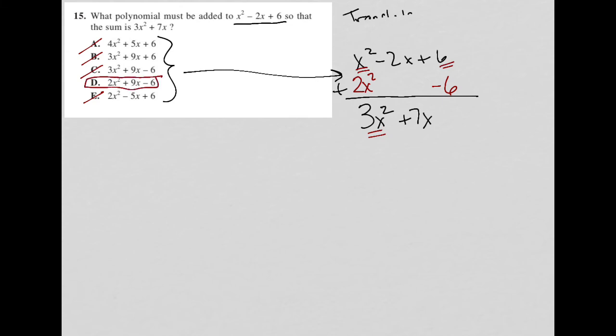I'm going to confirm that by adding a 9x here. I do confirm that negative 2x plus 9x is 7x. So choice D is the best answer.